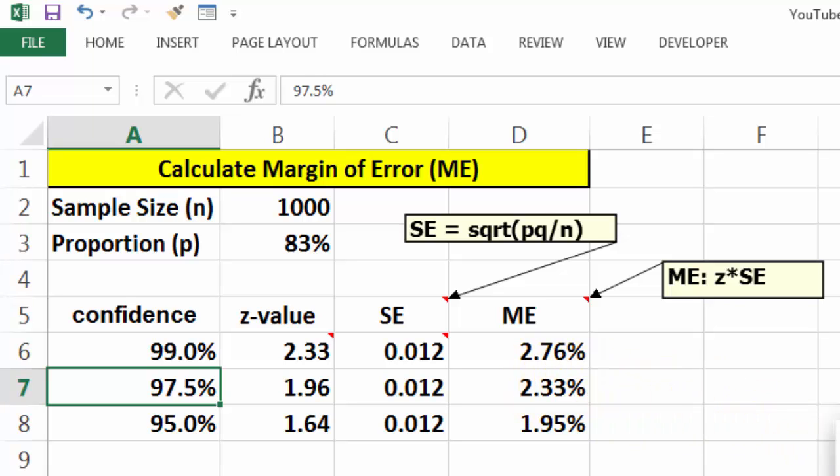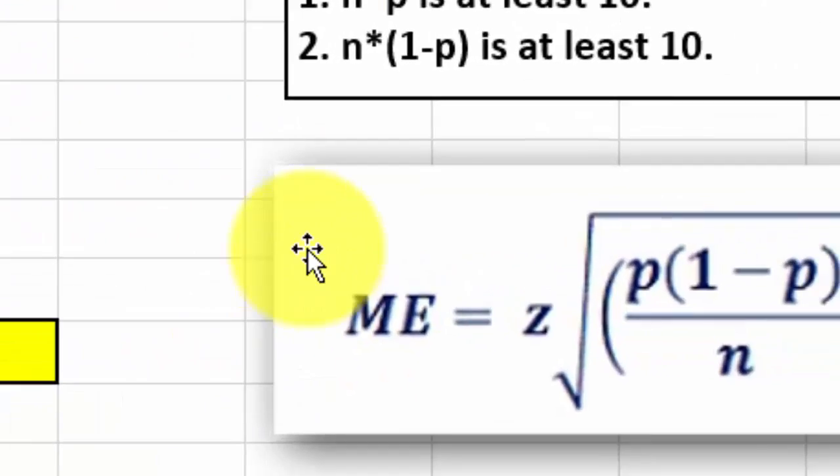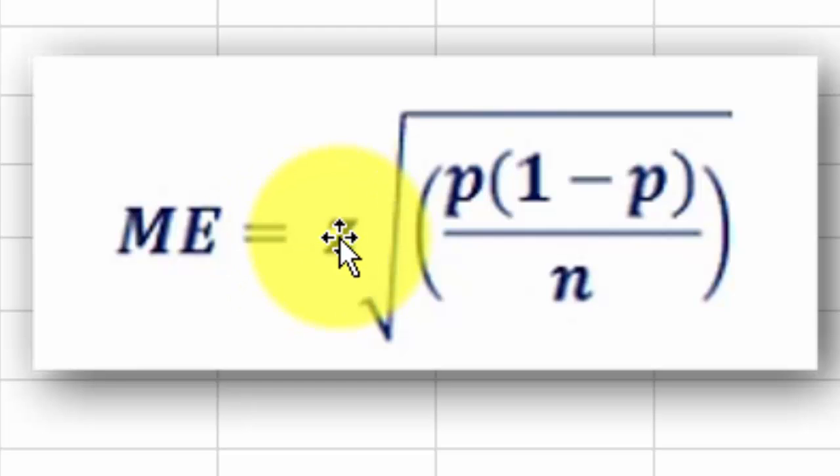How did we calculate it? The margin of error is calculated with this formula: the z-value, which we will discuss soon, times the square root of p times (1 minus p), or pq, divided by the number of cases n.